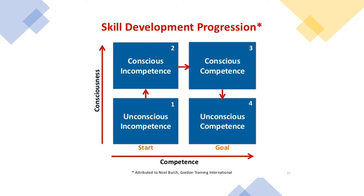The first stage of learning is what we call unconscious incompetence — stage one. This is the basic stage where the learner isn't aware that a skill or knowledge gap exists; we don't know what we don't know. Using the example of driving a car: when we first wanted to learn to drive, we didn't know what we didn't know — what we actually needed to know to drive a car. Once we started going through the theory, we start to realize what we didn't know. That's unconscious incompetence.